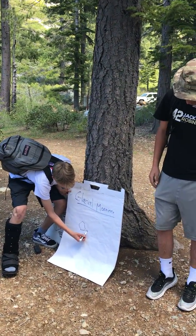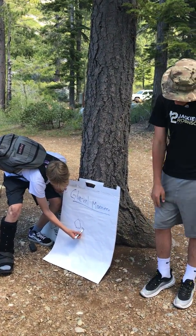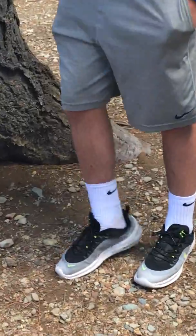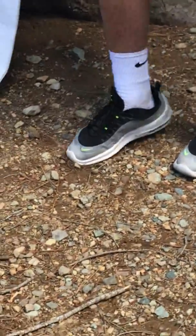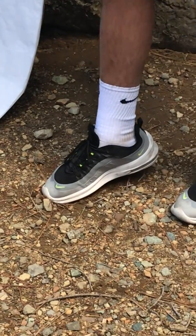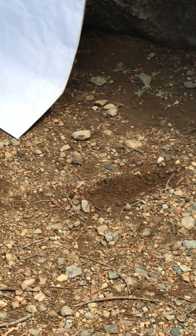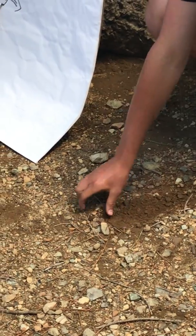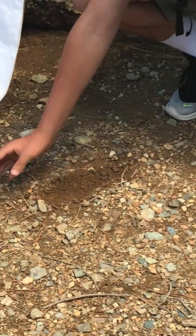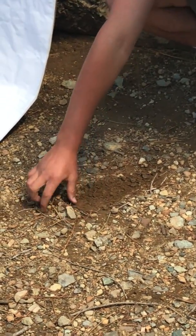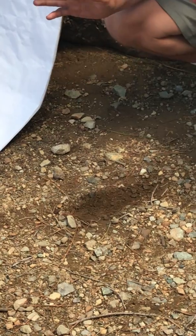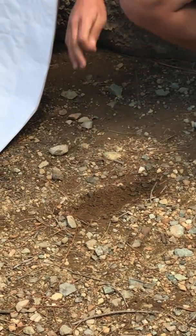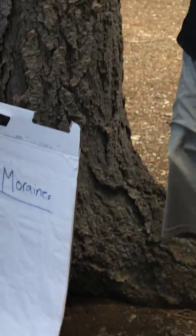For example, say my shoe is the glacier and it's moving down this slope here. As it recedes back and melts, it leaves this little ridge kind of thing. It's kind of hard to see, but just imagine this is left because the rocks and the debris are being pushed out. And as the glacier comes back, they're left in place — and this is what you see right here.